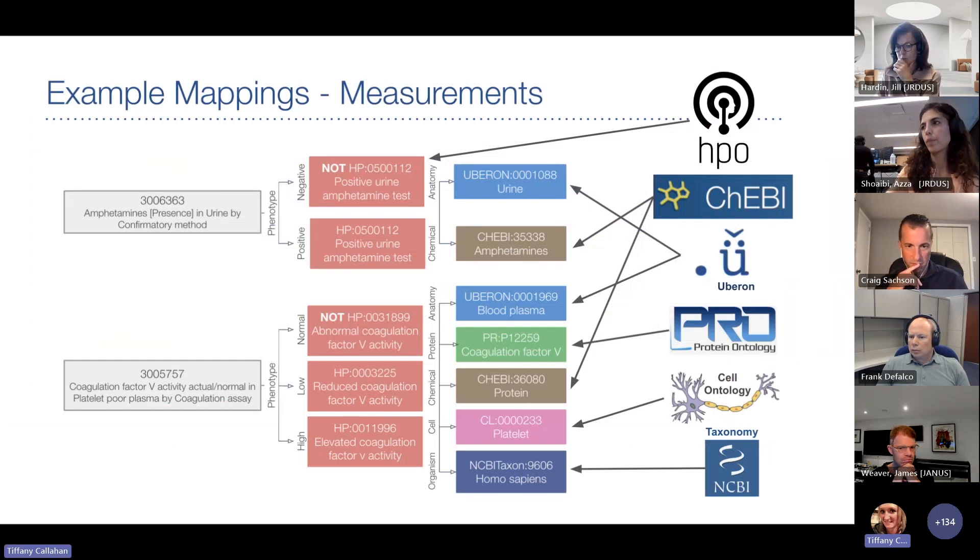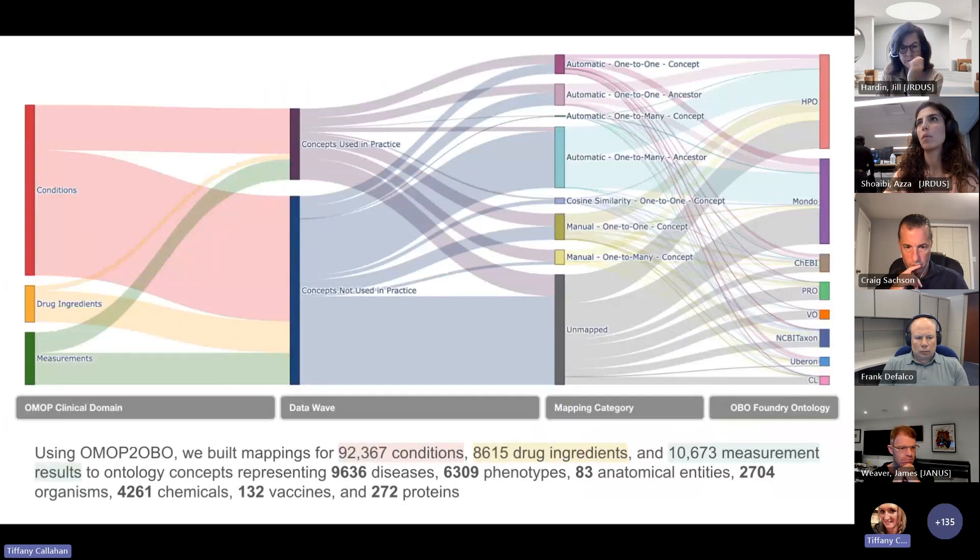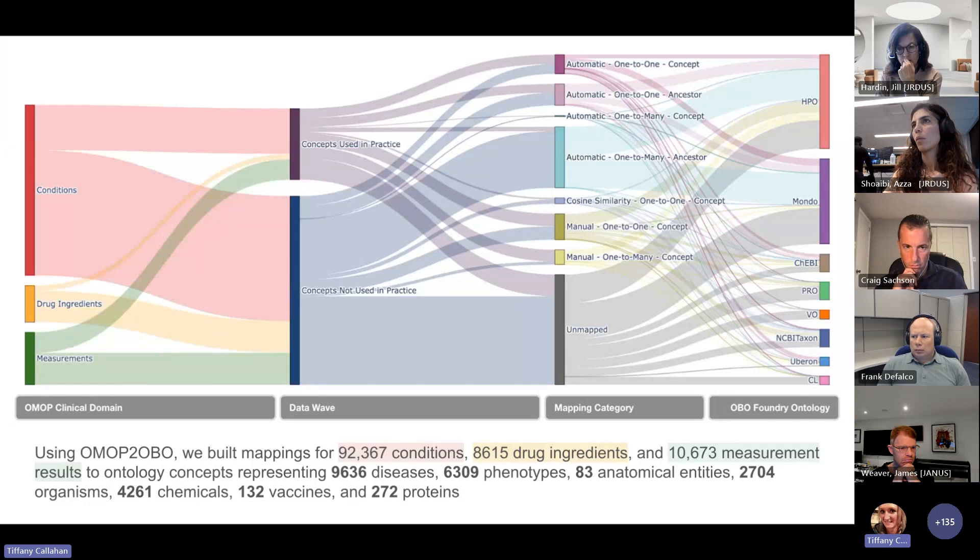So with these mappings in mind and our goal to really create a robust set of mappings, we sought to use OMOP to OBO to apply it to all standard concepts that had been used at least one time in clinical practice at a Colorado hospital. And we mapped them to the OBO ontologies that we discussed in the prior slides. So the human phenotype ontology, the Mondo disease ontology, KEBI, the cell ontology, Uberon for anatomy, and the NCBI taxon for organisms and the vaccine ontology.